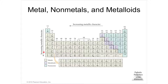So francium would be more metallic than lithium. Also, things on the left side of the periodic table are more metallic, and things on the right side are more non-metallic. Most of the periodic table is metals — all the way down from aluminum through tin, bismuth, and polonium. All of these are metals, including the inner transition metals and transition metals.